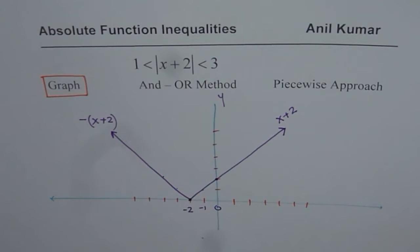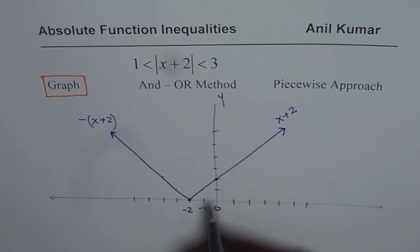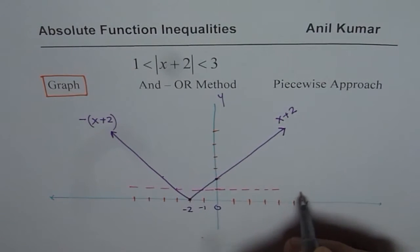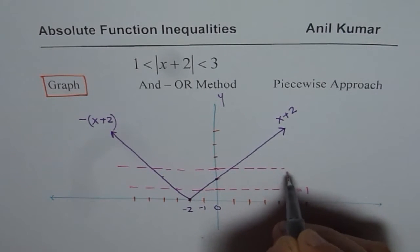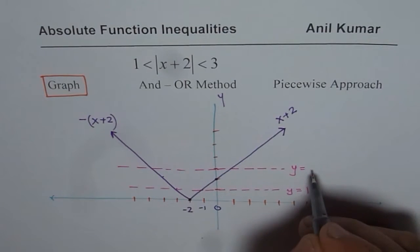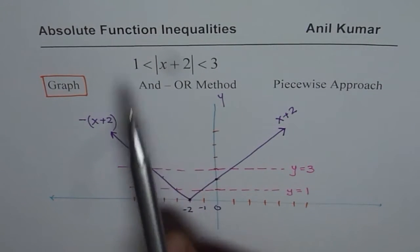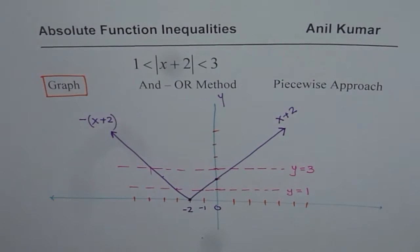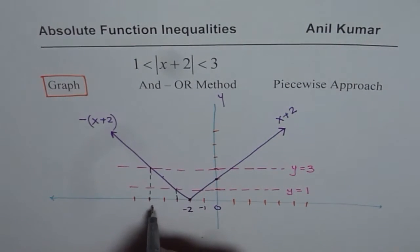Now the question is, we need to find the interval when this absolute function is within 1 and 3. That means the y value of 1. So we can draw a line here. This is y equals to 1. And then at 3. So this is 2, this is 3. So we will draw a line here. Now when you say that this absolute function is less than 3 and greater than 1, it means the portion which is within this. So that really means the value between this.